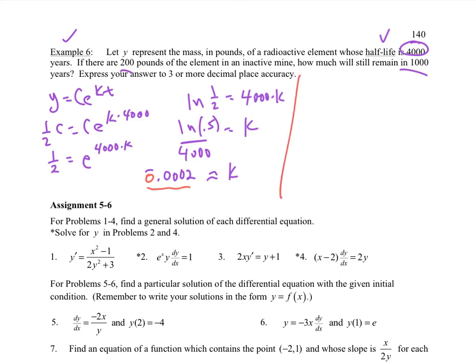So now to finish this up, it says how much will remain in 1,000 years? So y = 200 because I have 200 pounds starting with it, times e^(-0.0002·1000). You punch that into your calculator. Make sure you can use your calculator. 168.179 and that would be pounds.